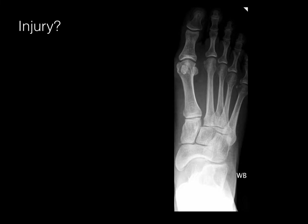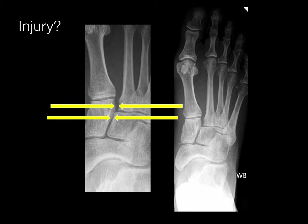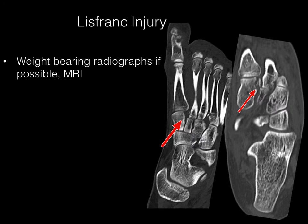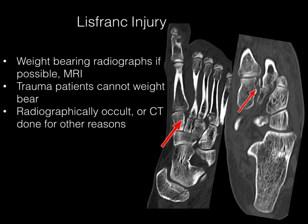Example of a foot radiograph — injury or not? Looking closely at the area, following the alignment lines, there's incongruity between the cuneiforms and the metatarsal bones — an example of a Lisfranc injury. Usually identified with weight-bearing radiographs or MRI, but trauma patients often can't bear weight and these injuries can be radiographically occult. CT may be done for other trauma reasons, and you have to make sure you look for this.